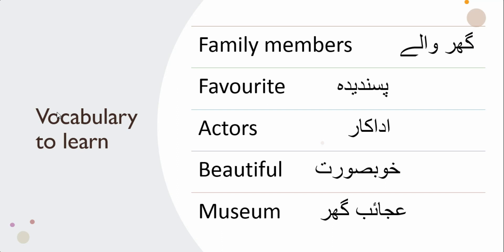Vocabulary to learn today — five words. First word: family members. Say after me: ghar wale. For example: mere ghar wale bohut achhe hain, mere ghar wale mujhse bohut pyaar karte hain. The other word for ghar wale would also be khandan ke afrad — mere khandan ke afrad mujhse bohut pyaar karte hain. Second word: favorite — pasandida. For example: meri pasandida kitab Alchemist hai, mera pasandida khana palau hai. Say after me: pasandida.